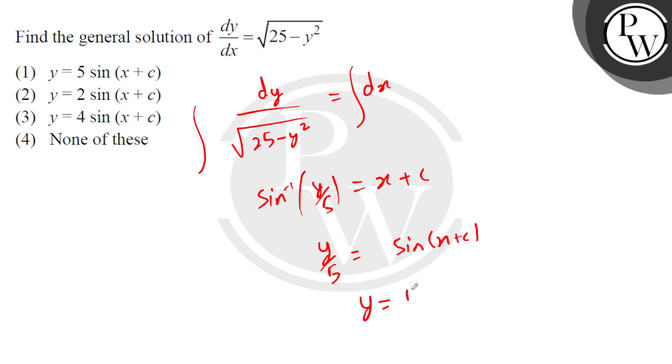So ultimately, y = 5 sin(x + c). So the correct option is option 1. I hope you understood well, best of luck, thank you.